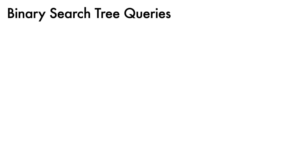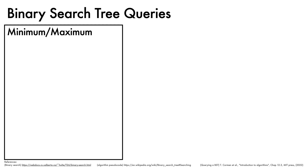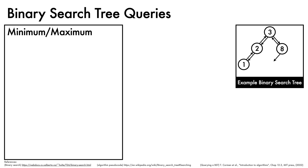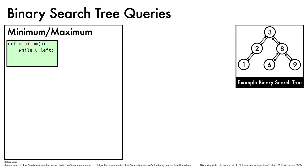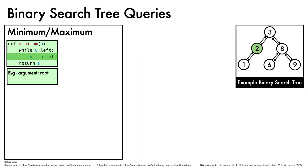We now turn to queries on binary search trees, starting with finding the minimum and maximum value in the data structure. To compute the minimum in the subtree of node u, we check if u has a left child, and if it does, we move to the left child. Once there is no longer a left child to move to, we return the current node. For example, suppose we call the min function on the root node. Since it has a left child, we move down the tree to the left. This too has a left child, so we move down again. This node has no left child, so we return it, providing the node with key 1.